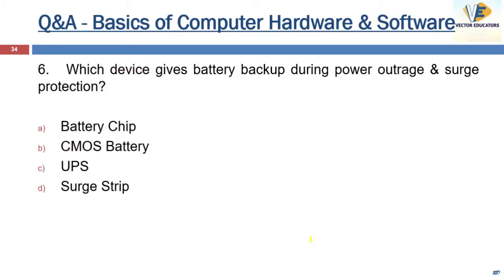The next question: which device gives battery backup during a power outage and surge protection? The answer is UPS — Uninterrupted Power Supply. UPS supplies power and allows safe shutdown of the computer. Surge here means a spike in the electric current.